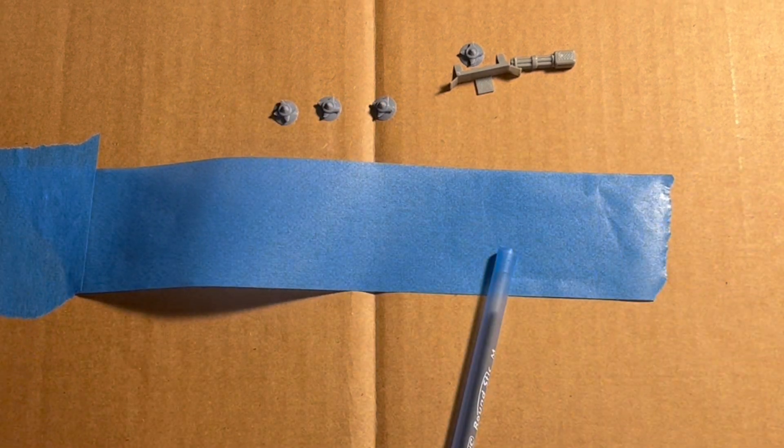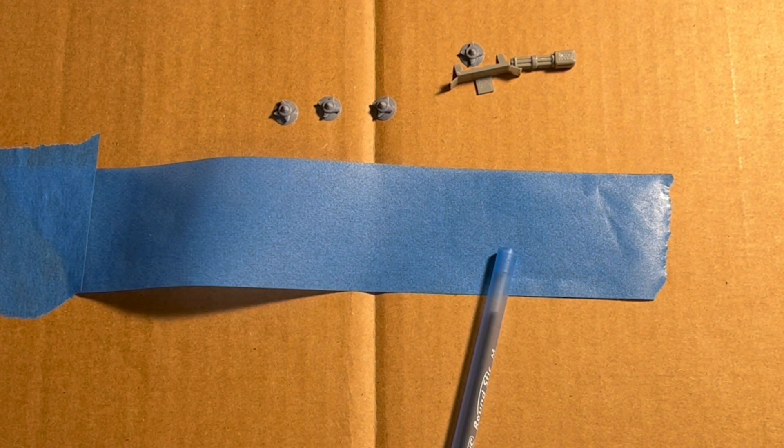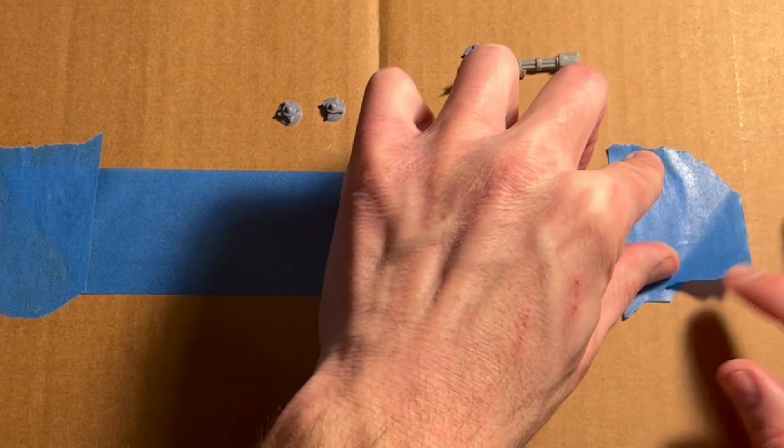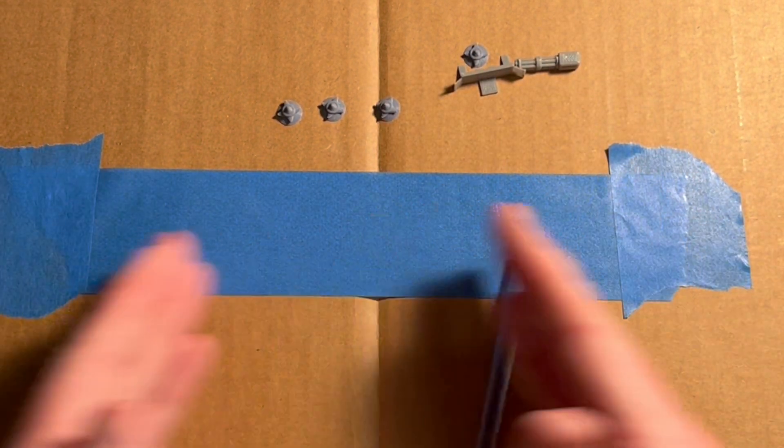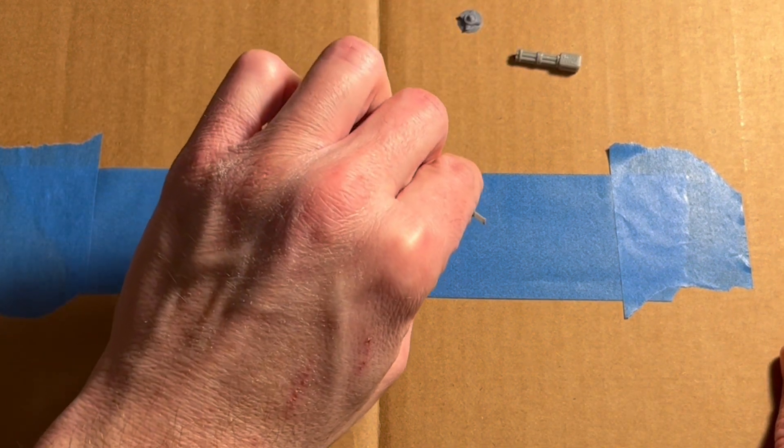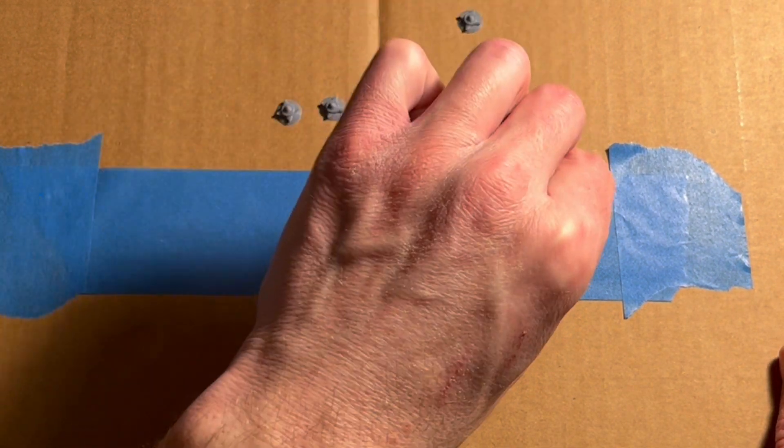So now I have a big section where the sticky end is up, and I'm just going to take the bits that I want to prime and I'm going to stick them down. They will not blow around. They will stay right in their spot.